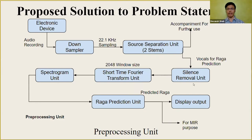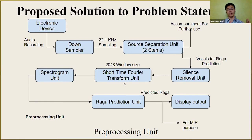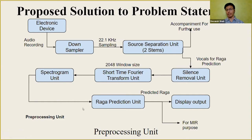Then there is the Short-Time Fourier Transform (STFT) unit, which converts the audio data from the amplitude domain to the frequency domain. There are many hyperparameters to play around with, including the window length and the hop length. This frequency data is then converted into a spectrogram image by the spectrogram unit, and it is these images which are used by our deep learning models to predict the Raga.